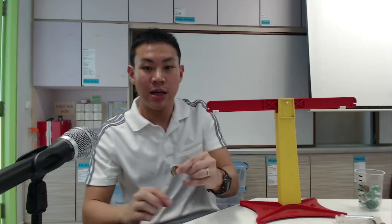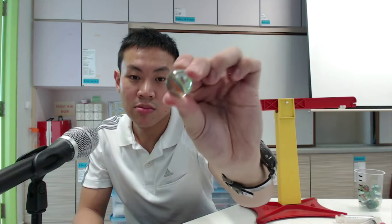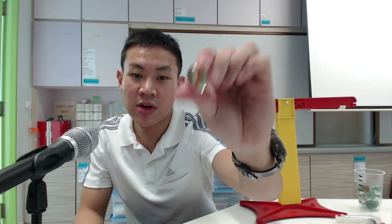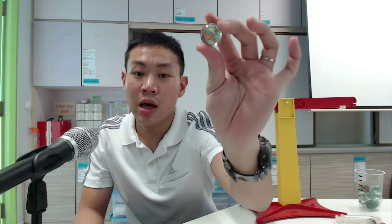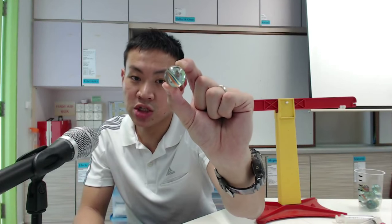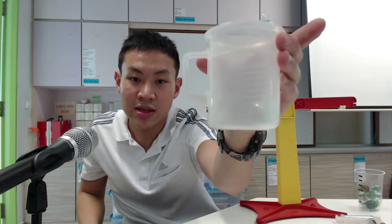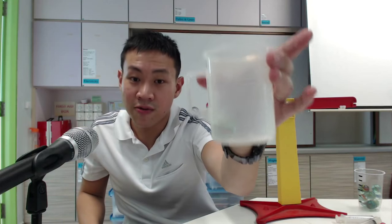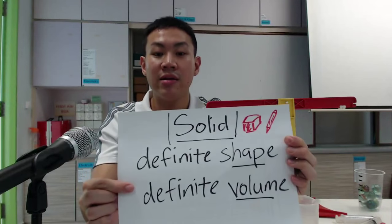For example, let's look at this marble here. The shape is round and it has a fixed shape. Even if I drop it or put it in the microwave and take it out, it is still the same shape. It also occupies a fixed volume — a fixed space. I may put it into a cup and it occupies the space inside this little plastic beaker, but it still has a fixed volume. Solid is anything that has definite shape and definite volume.